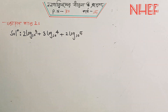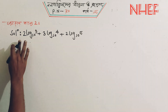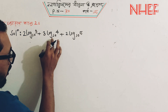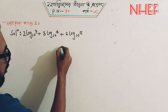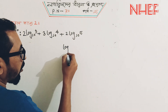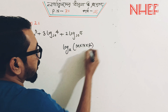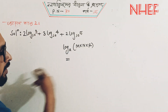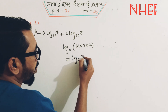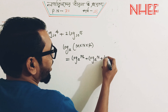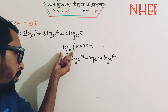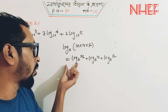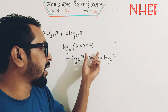So that shows you 2 log 10 base 3 plus 3 log 10 base 4 plus 2 log 10 base 5. Now the log property means: log base m of a, plus log base m of n, plus log base m of r.